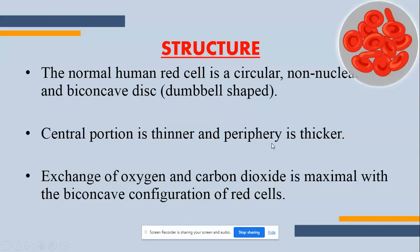Now we will look at the structure of RBCs. The normal human red blood cell is circular, non-nucleated — having no nucleus — and it is biconcave. Biconcave means it is concave on both sides, so the center is thinner and the periphery is thicker.